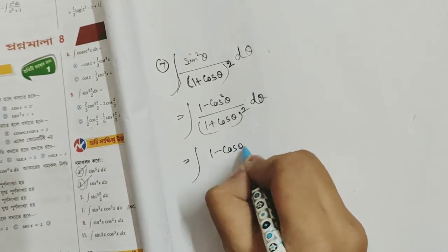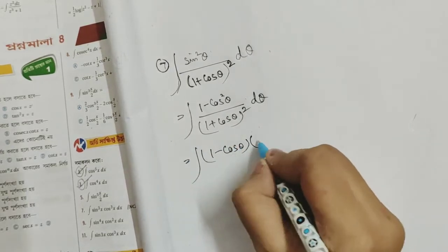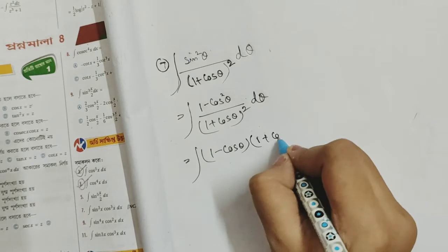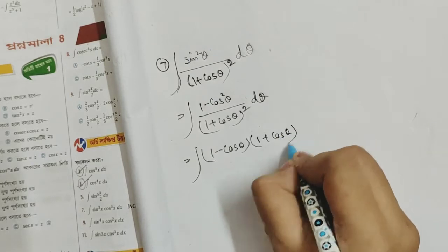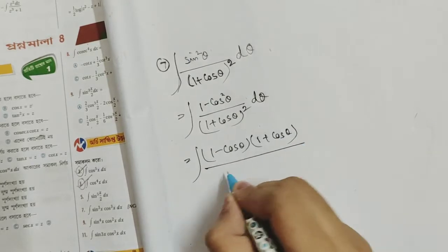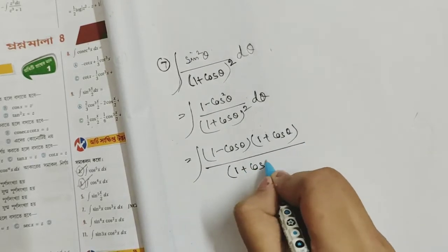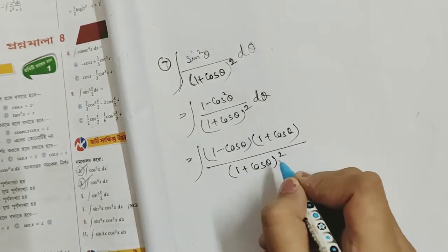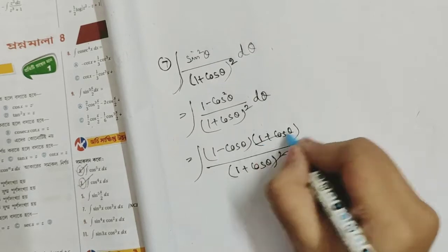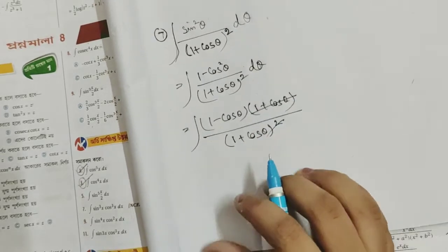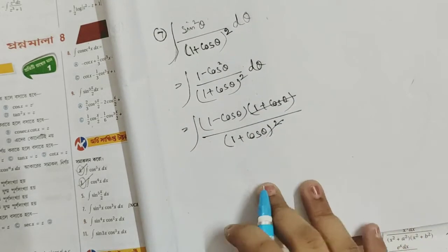We have a·cos theta, a minus b into a plus b, into 1 plus cos theta divided by 1 plus cos theta whole square. So this is 1 plus cos theta.